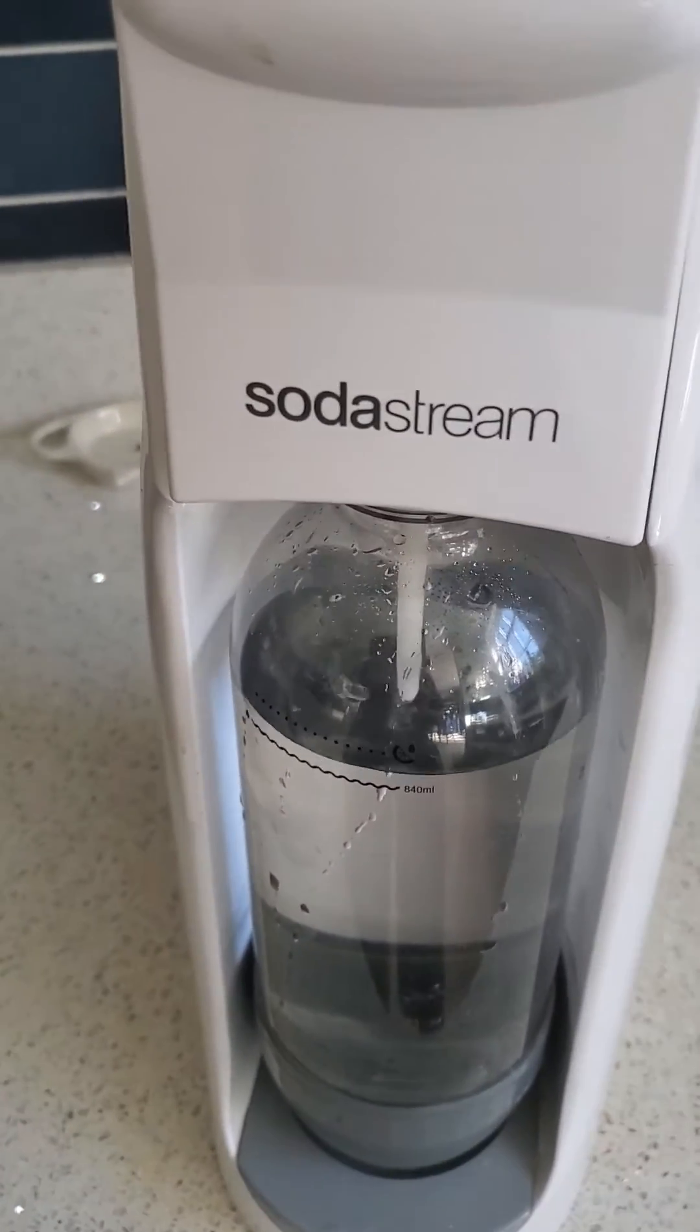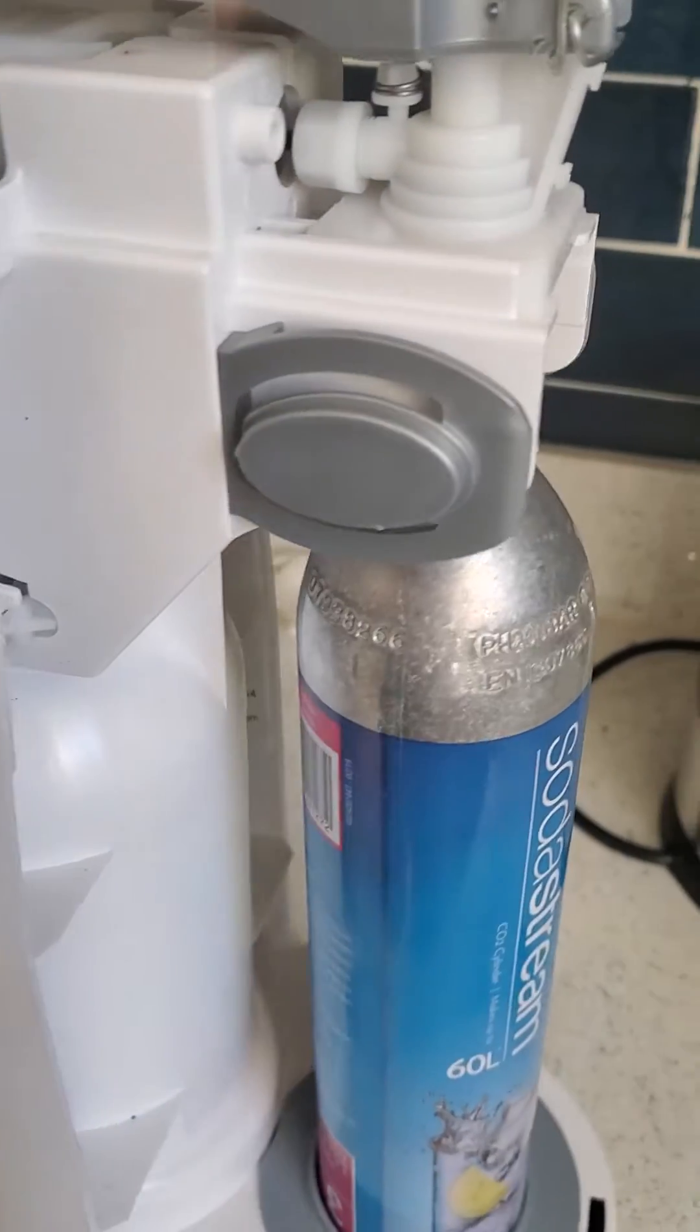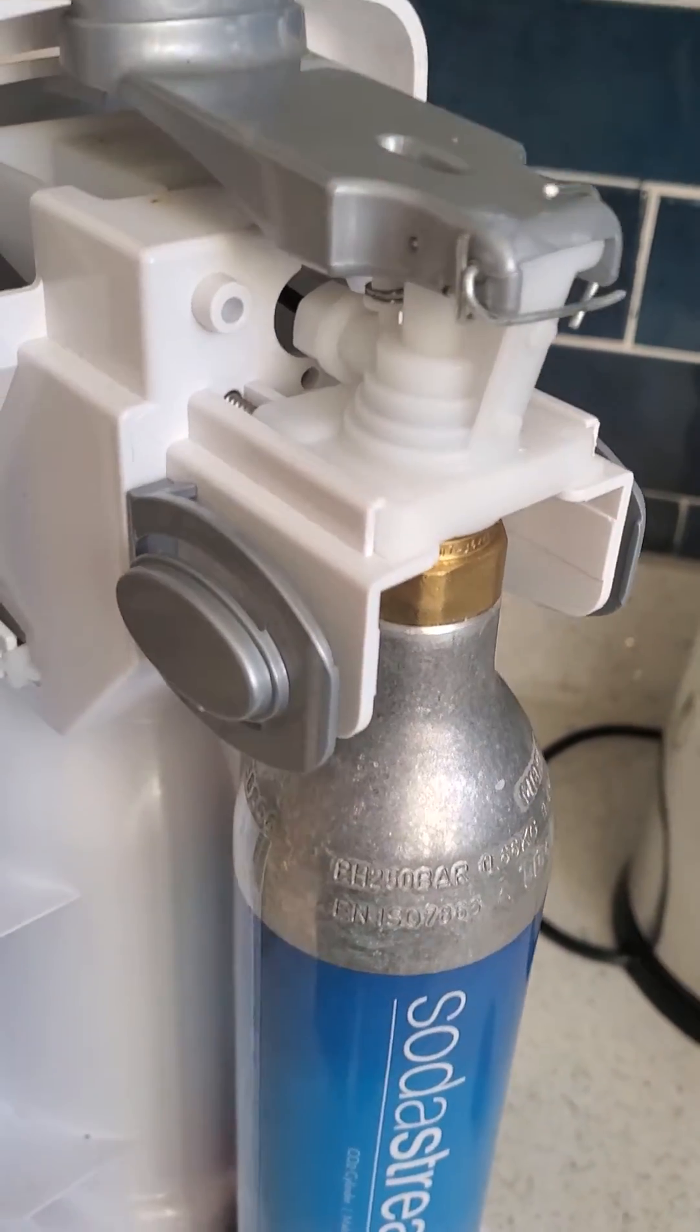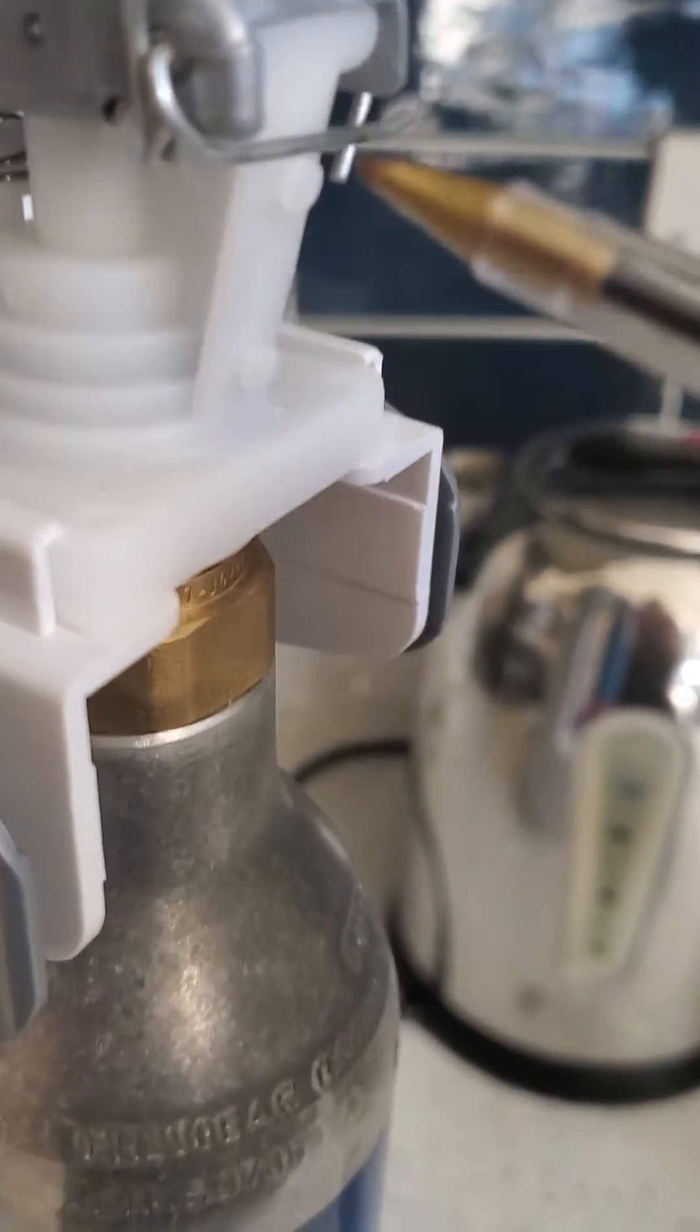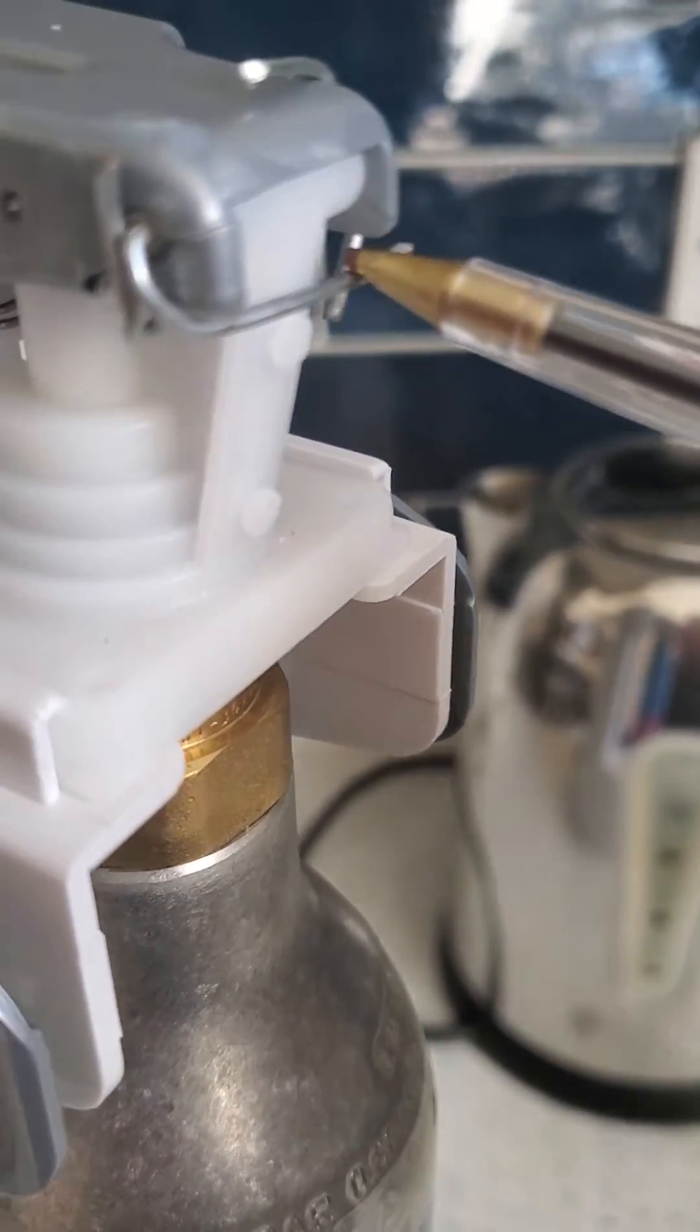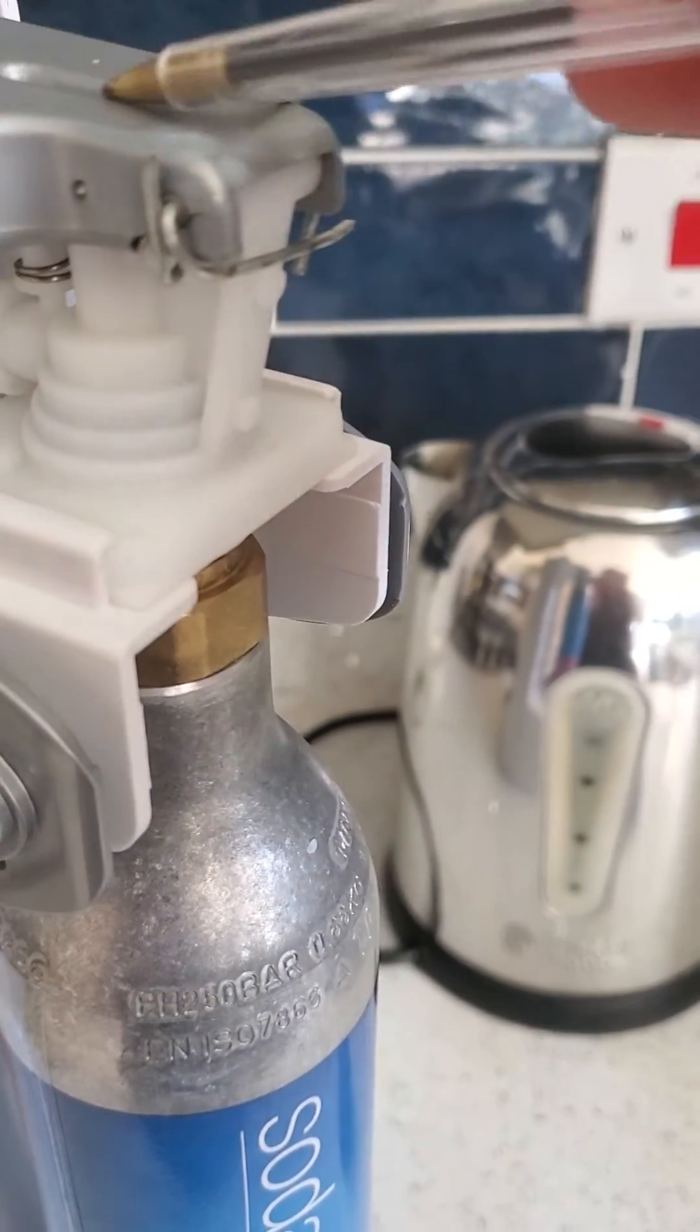This is the SodaStream, about 18 months old, and it's got a very serious design flaw. This wire here isn't normally on it. All you've got is this little lever releasing the gas.